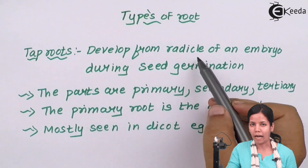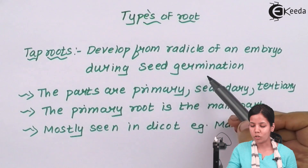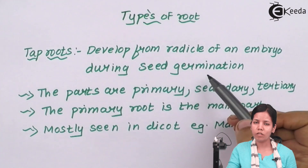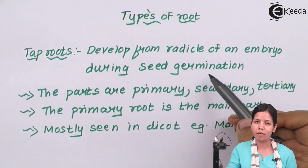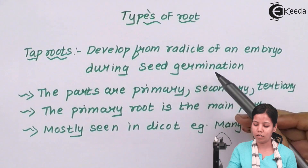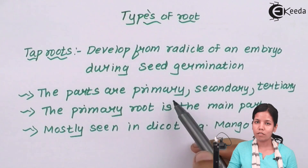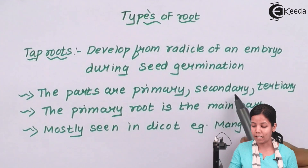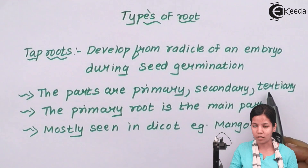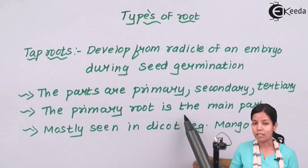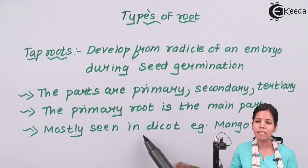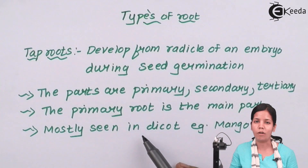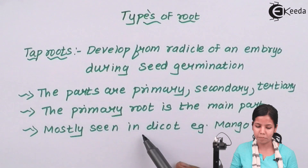Tap roots, one of the types of roots, develop from the radicle — the small growth which develops during the process of seed germination when a seed is sown in soil. Tap roots can be divided into primary, secondary, and tertiary. The primary is the main part, and tap roots are basically seen in dicot plants, or two-cotyledon plants.